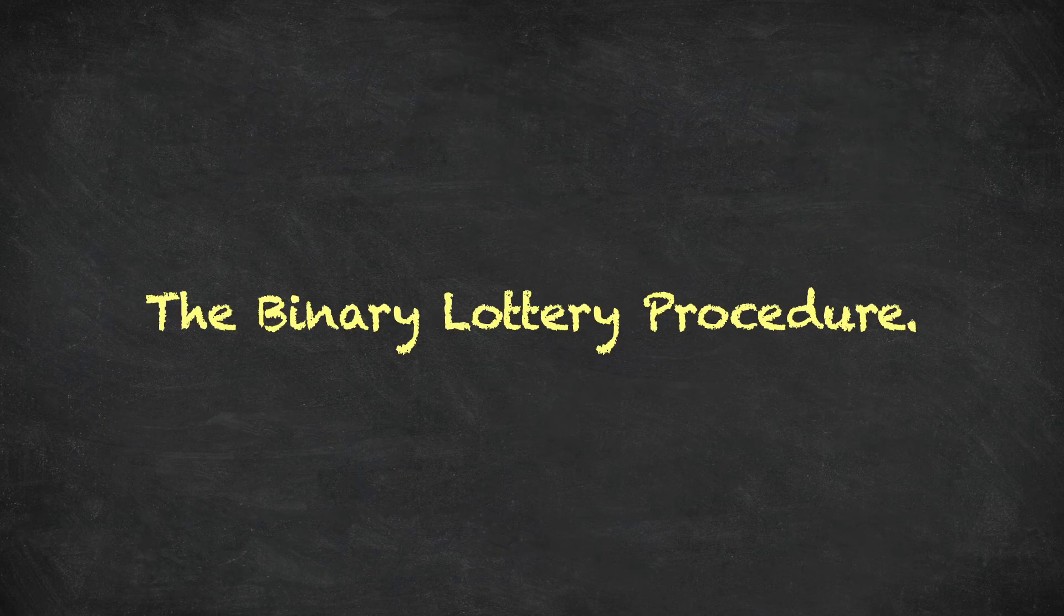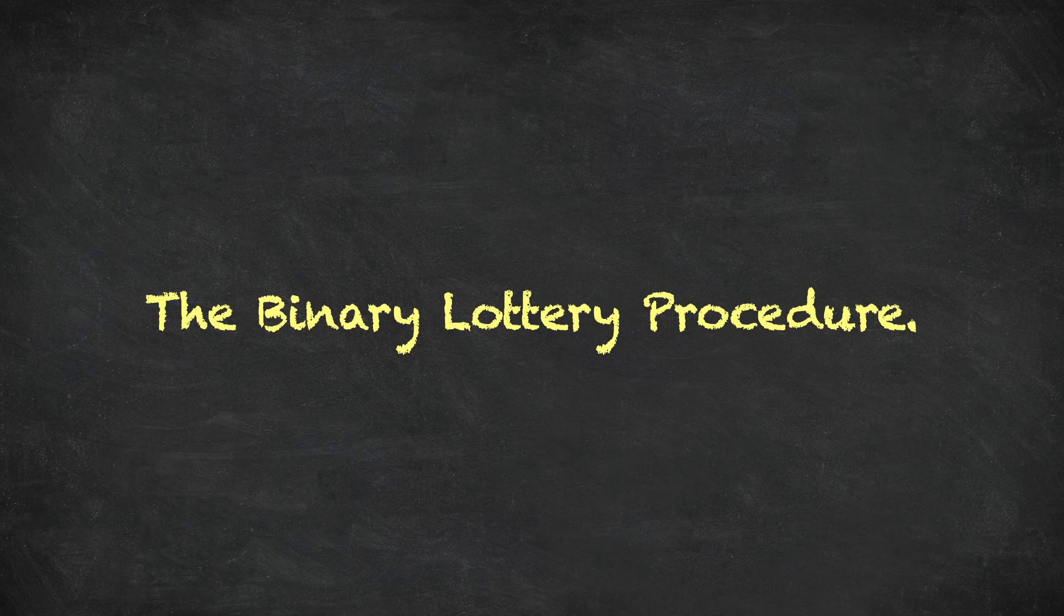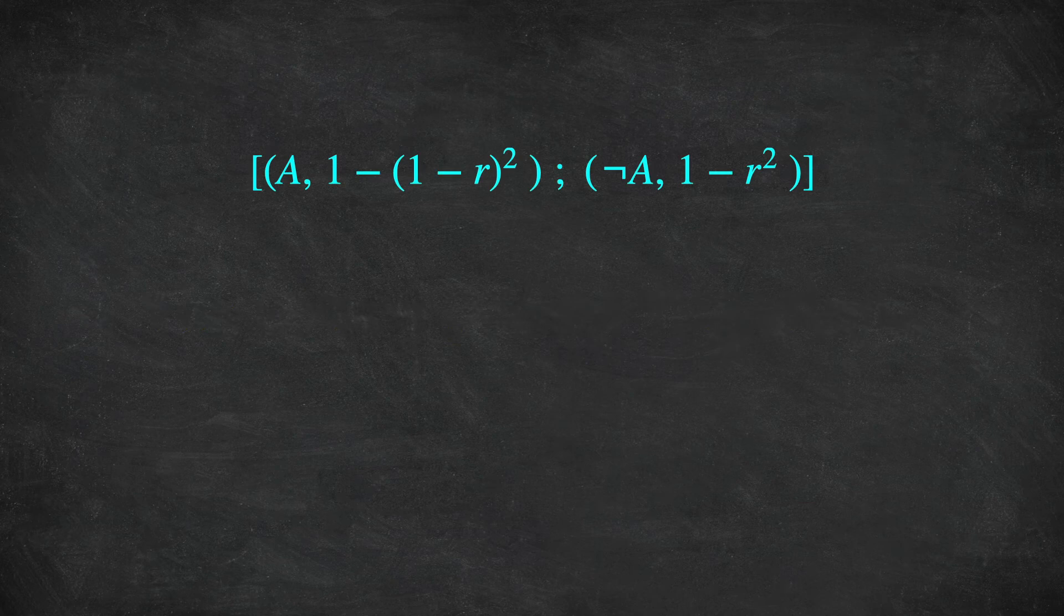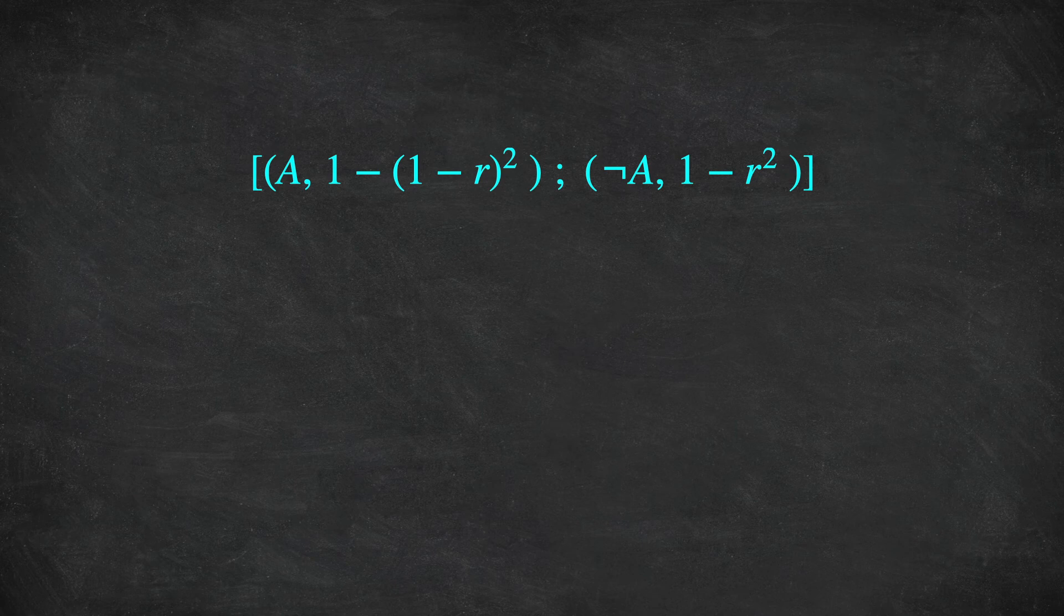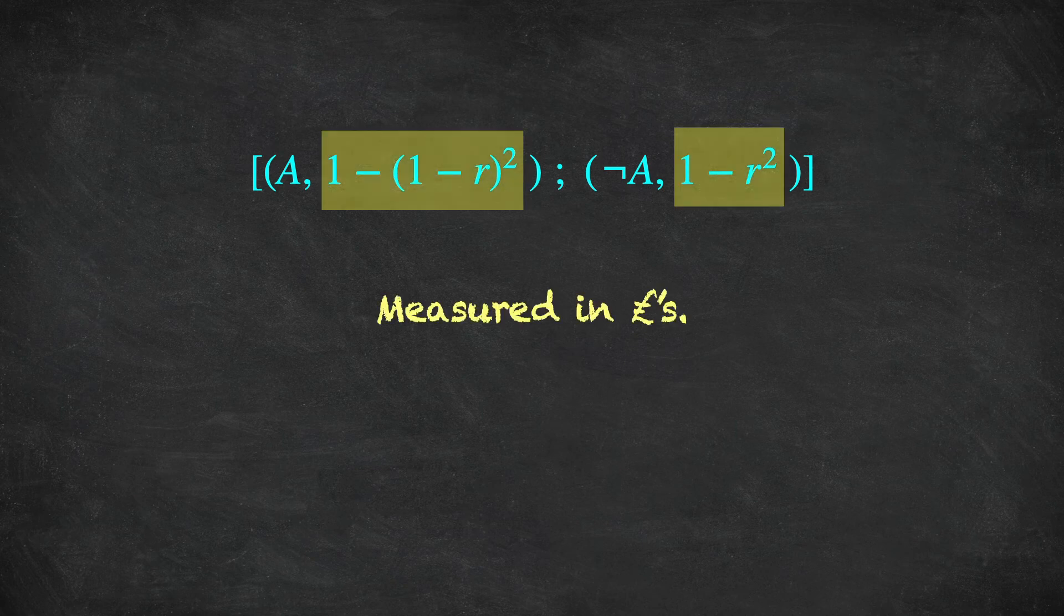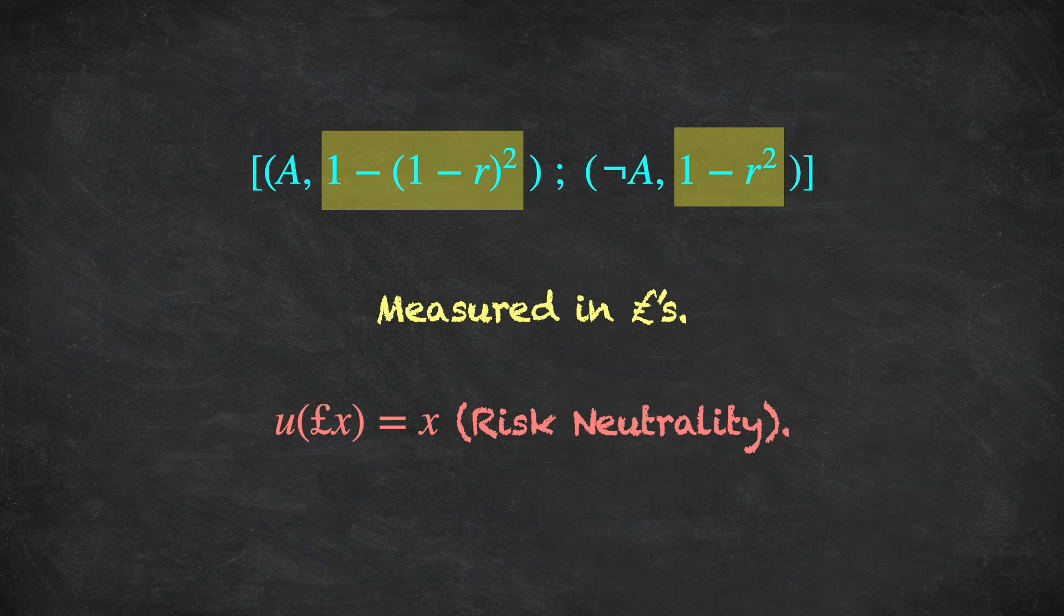So finally, let's discuss something called the binary lottery procedure. This is a very simple idea, but it's incredibly useful for eliciting subjective probabilities. And it also plays an important role in testing game theory in experiments. So what is the binary lottery procedure? Essentially, it means paying in probability points. So let's have a look at the quadratic scoring rule that we've just studied. Here it is. If event A happens, you get paid 1 minus (1 minus R) squared. And if A does not happen, if not A happens, then you get a payment 1 minus R squared. And implicitly, we were assuming that these numbers were measured in pounds. So amounts of money in whatever currency.